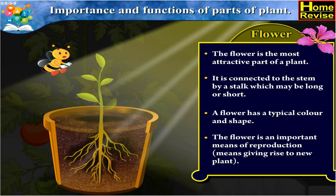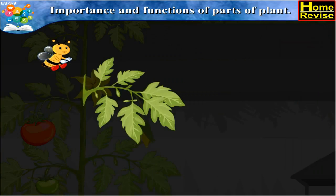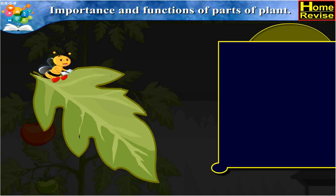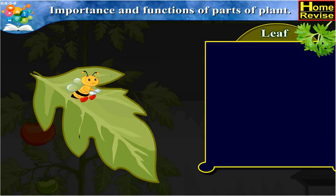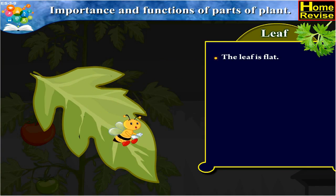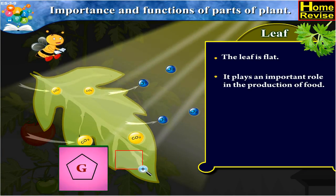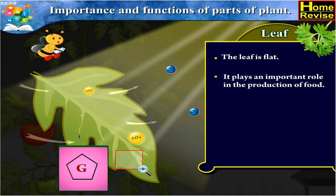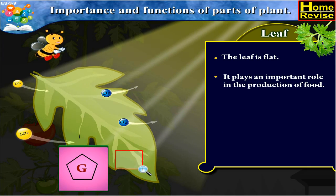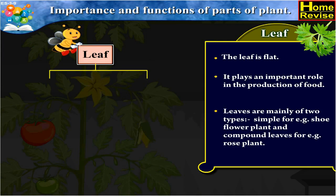The second part of a plant is the leaf. The leaf is flat. It plays an important role in the production of food. Leaves are mainly of two types.